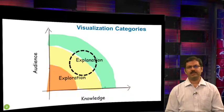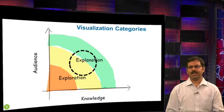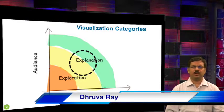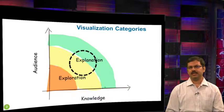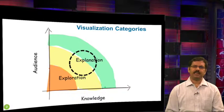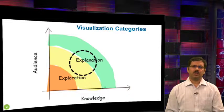In between these two extremes lies a very interesting space which is part exploratory and part explanatory. In this space, a curated dataset is given and presented to the audience to allow exploration on their part. These visualizations are necessarily interactive, and it is very much likely — maybe even desirable — that the audience can come up with observations and findings that the original creator of the visualization didn't anticipate. These visualizations are characterized by a certain freedom of discovery of information.